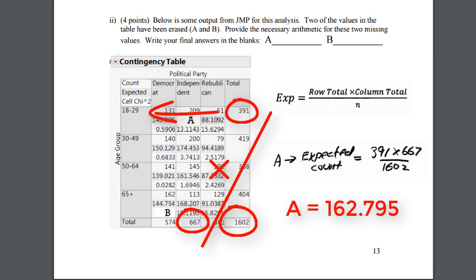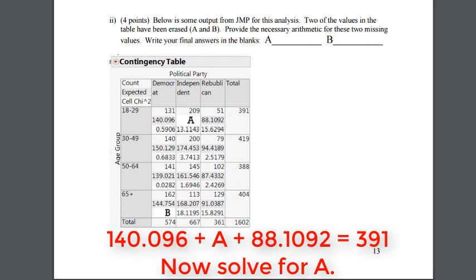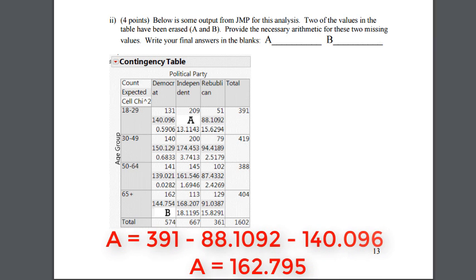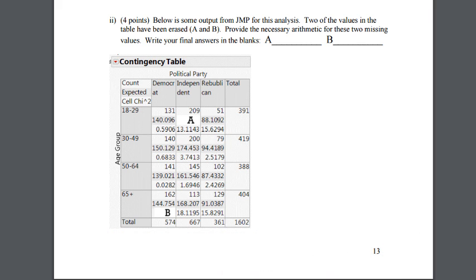If you notice, 391 lines up with the 18 to 29 and 667 lines up with the independent. It's the row and the column total for the associated group that we are interested in, then we divide by the grand total. But we can also do this other ways. If you add up 140.096 and A plus 88.1092, you will get 391. So whatever 391 minus 88.1092 and 140.096 is, is what A is. Because the expecteds have to equal the row totals and also the expecteds also have to equal the column totals.